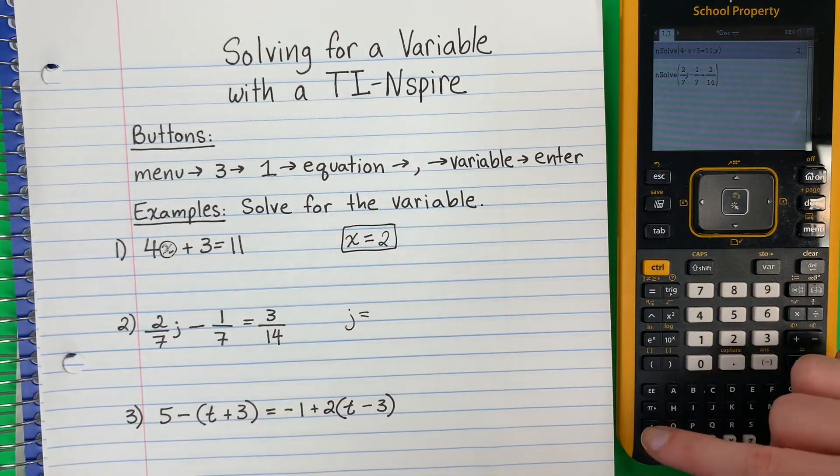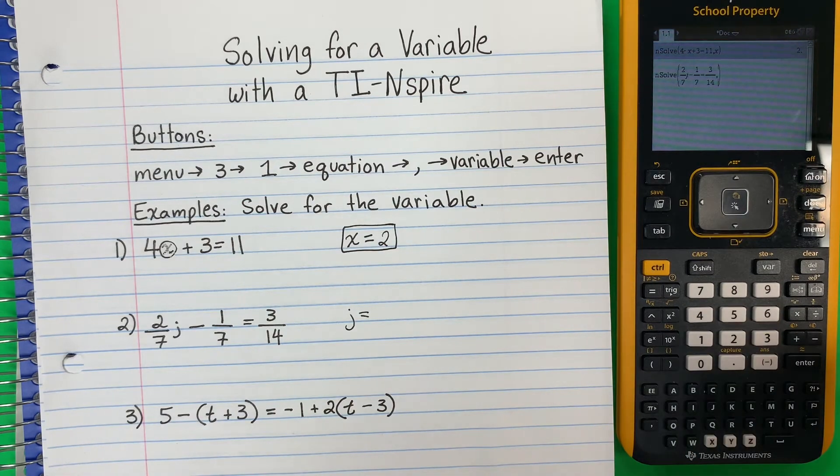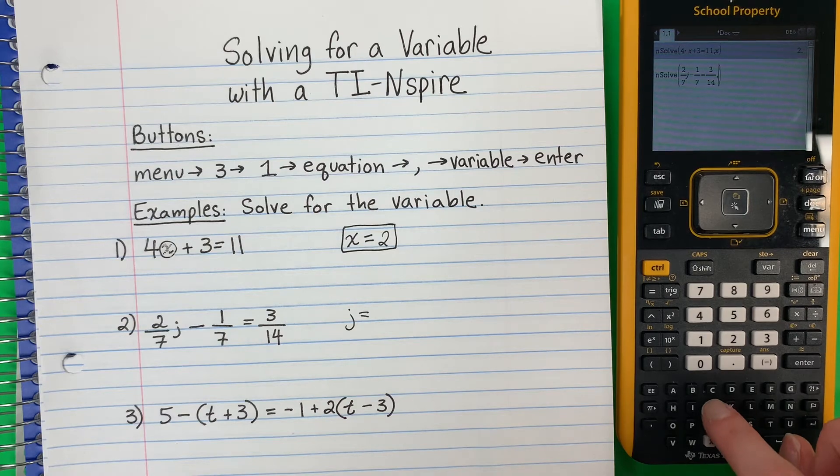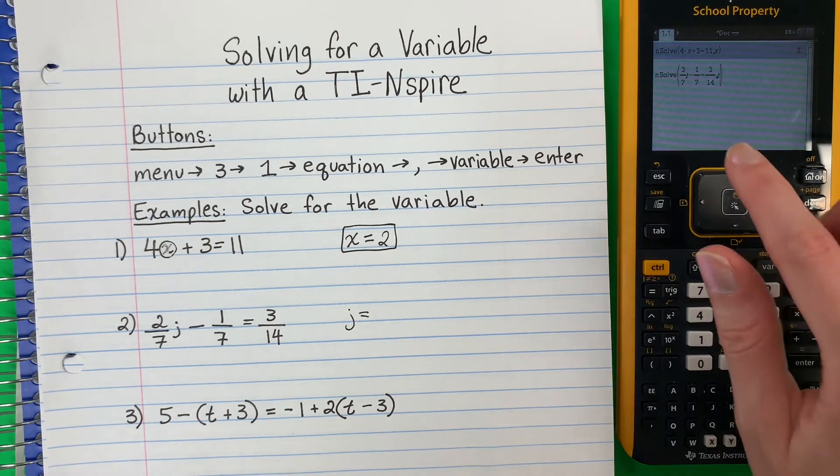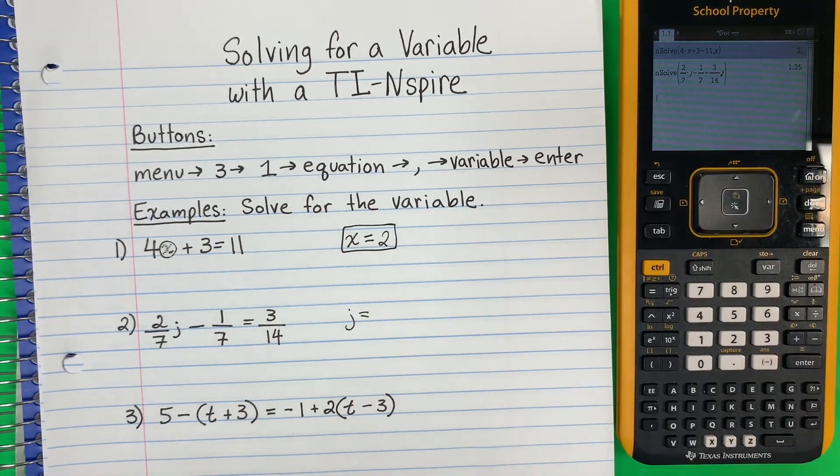Now put the comma, la coma. Okay? And then the letter. Y la letra, the letter is J. Esta vez es J, J. Okay? And then go ahead and push enter. So that is 1.25.